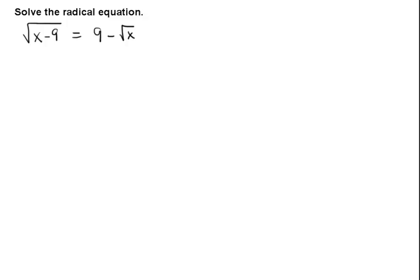Let's see how we solve this radical equation. The square root of x minus 9 is equal to 9 minus the square root of x. We'll start by squaring both sides of the equation.